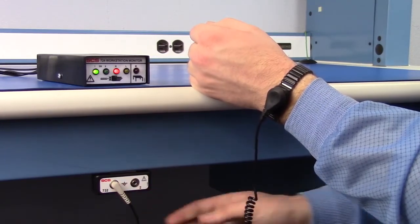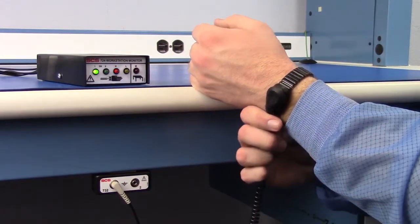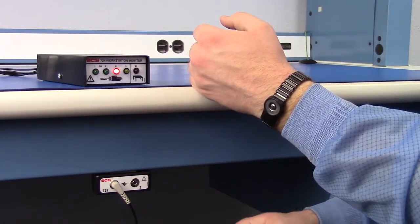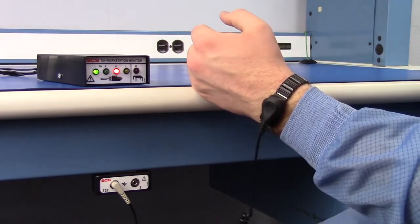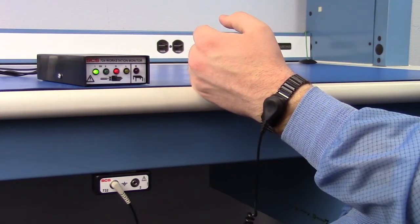The SCS724 Workstation Monitor is now ready to monitor an operator. Fit a dual-wire wrist strap snugly to the wrist and plug its wrist cord into operator remote jack number one. The operator is now grounded and monitored for connectivity and resistance range. Use operator remote jack number two when a second operator is to be monitored at the workstation.